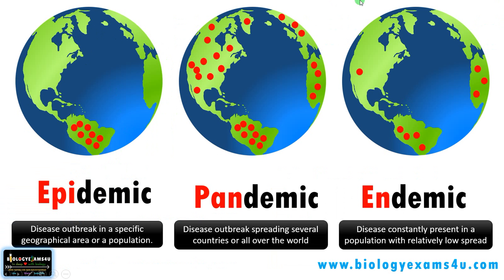To summarize: an epidemic is a disease outbreak in a specific geographical area or population; a pandemic is a disease outbreak spreading across several continents, countries, or all over the world; and an endemic disease is a disease that is constantly present in a population with a relatively low spread rate and is often seasonal or periodical. Hope you understand these terms — thank you so much. You are with Biology Exams for You dot com.